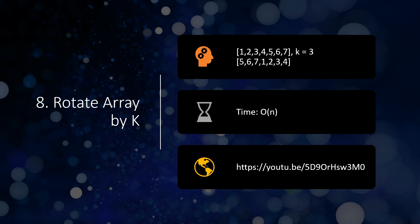The eighth problem is rotating an array by k positions. The array may not be sorted. For example, with the array 1 2 3 4 5 6 7 and k equal to 3, you shift the entire array — whether left or right depends on the problem statement. In this case we are right-shifting, so elements move in that direction.